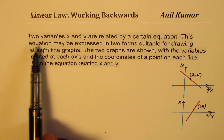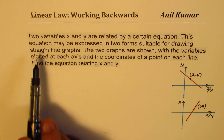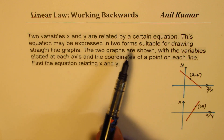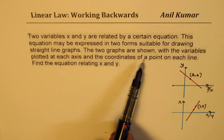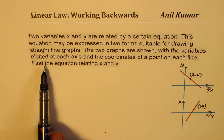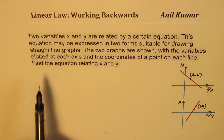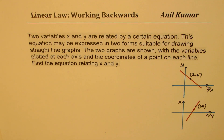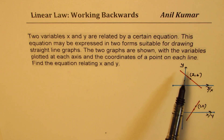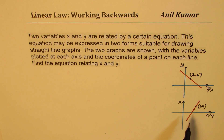The question is: two variables X and Y are related by a certain equation. This equation may be expressed in two forms suitable for drawing straight line graphs. The two graphs are shown with the variables plotted on each axis and the coordinates of a point on each line. Find the equation relating X and Y. Both graphs have a straight line, and both represent the same function — it is however a nonlinear function.